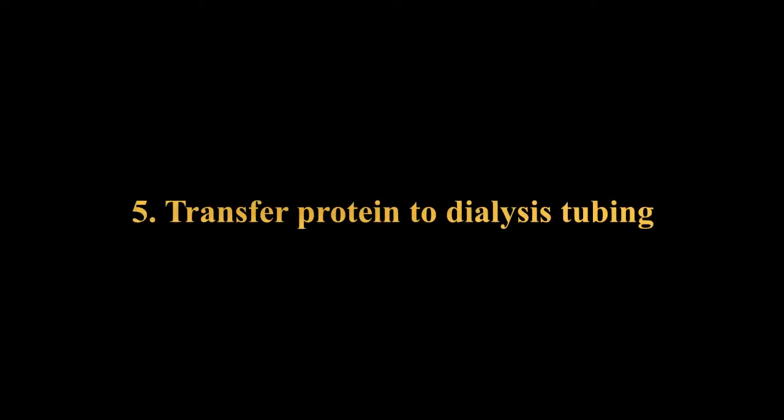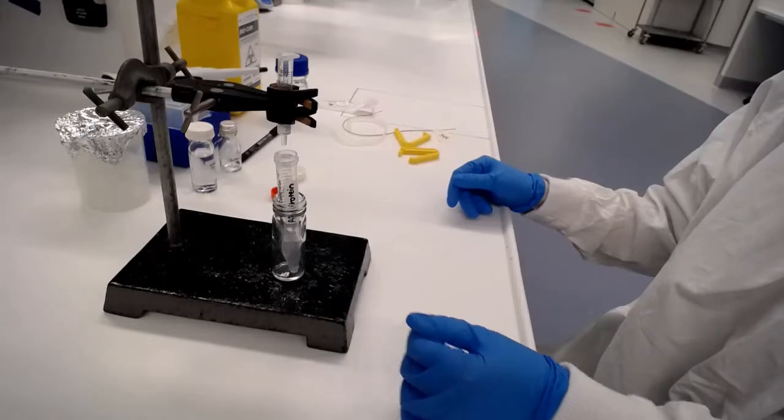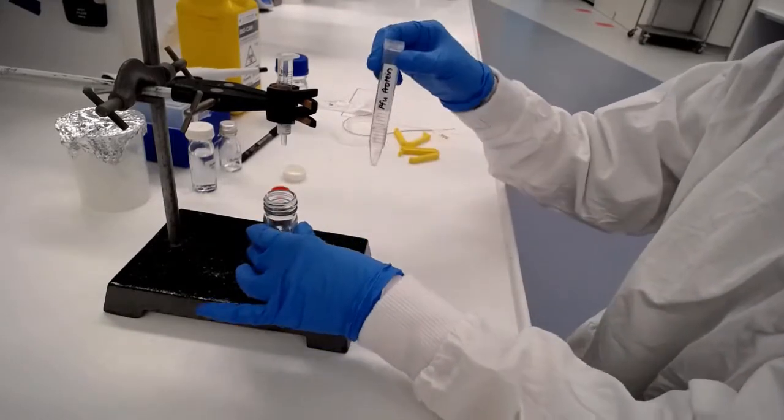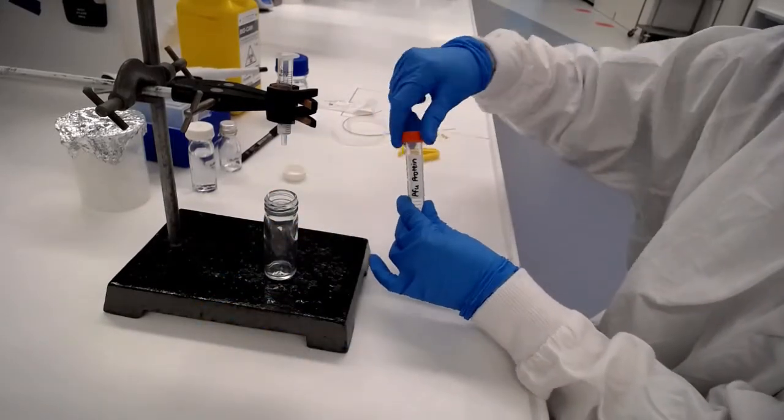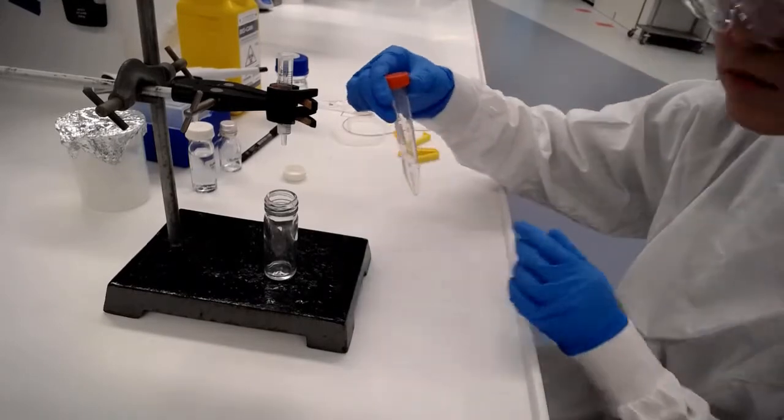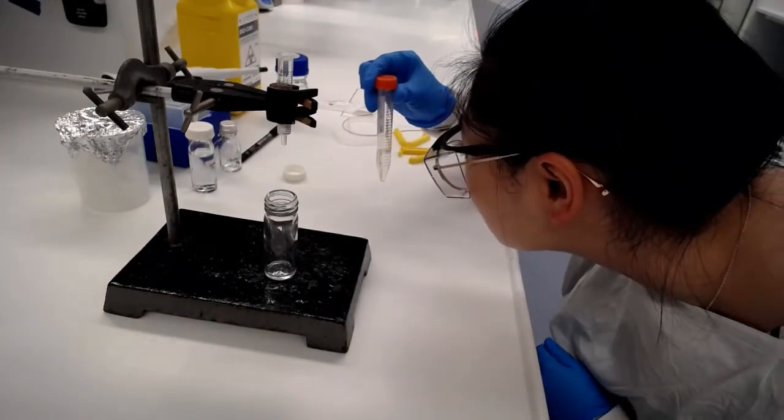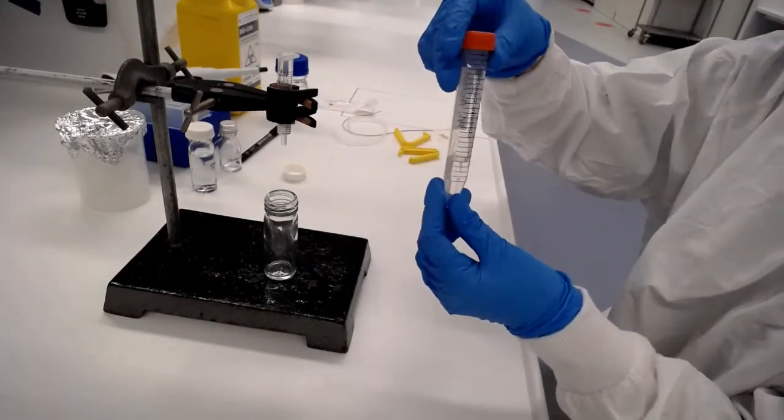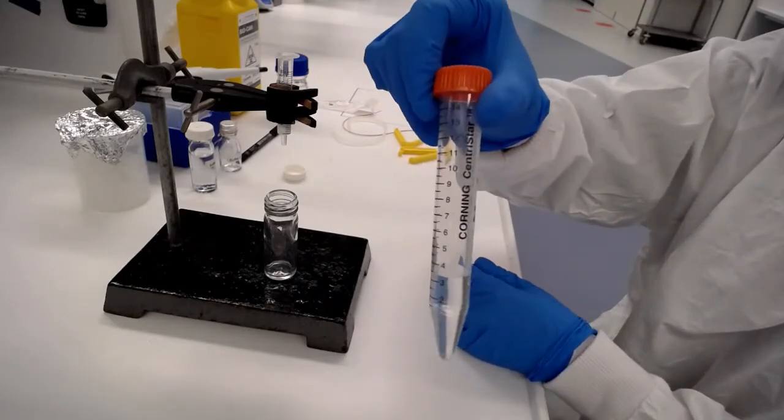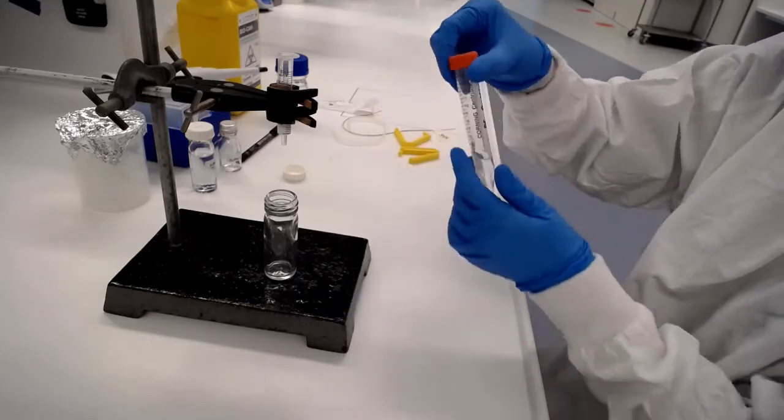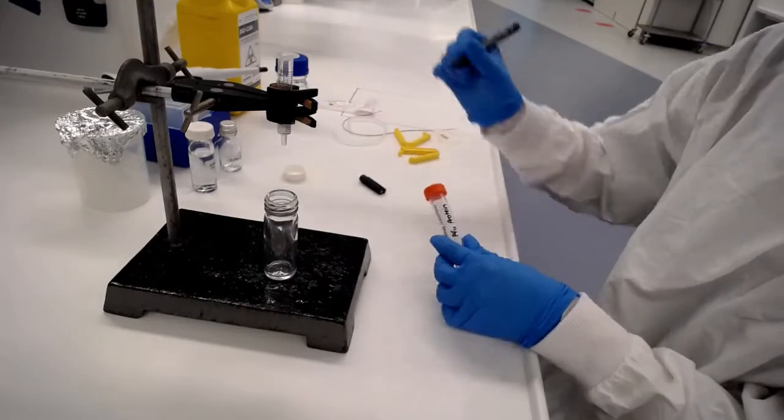We add three mils of buffer C and collect what's left. Now what's come out the bottom of the column should be our his-tag PFU protein and we just have to check how much we've got because this will help us later with our yield calculations. We've collected about three and a half mils there.